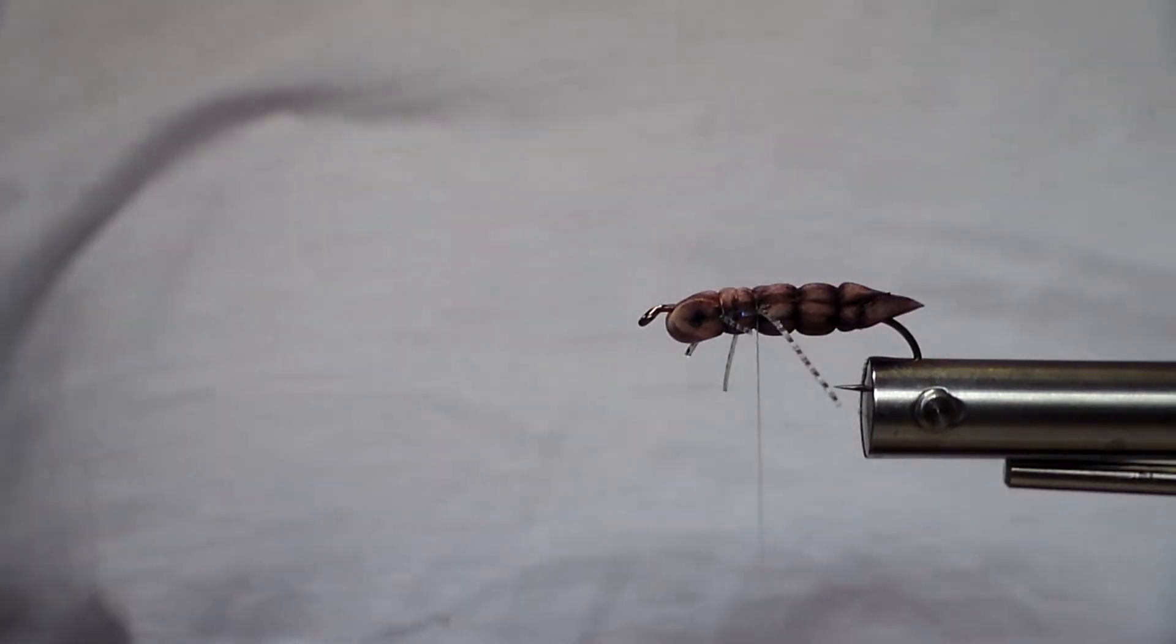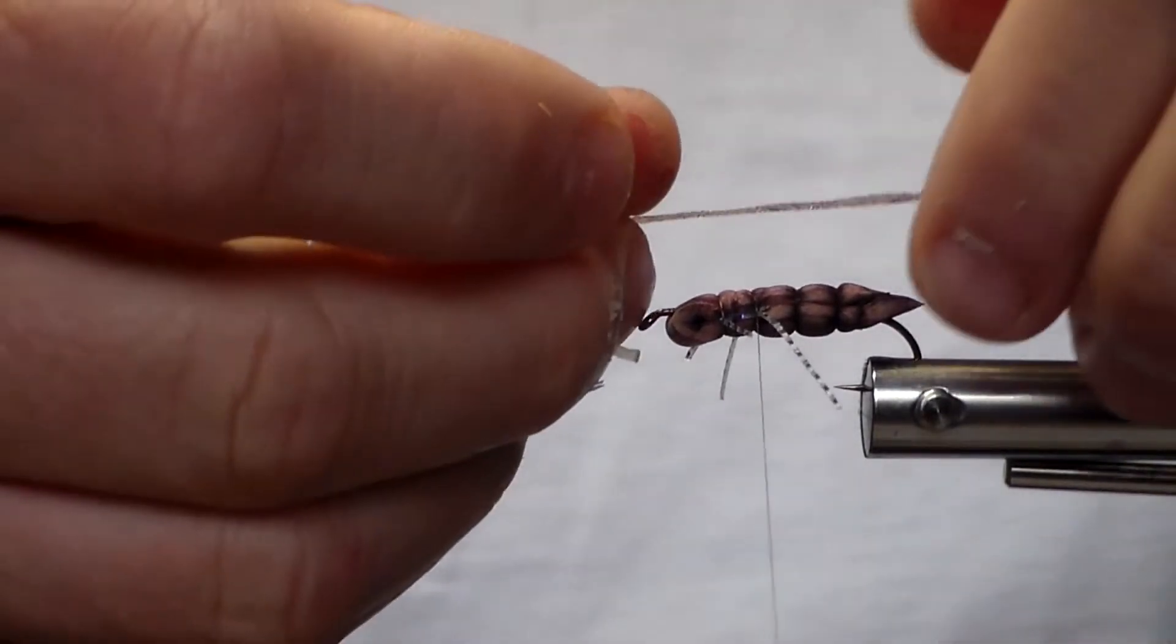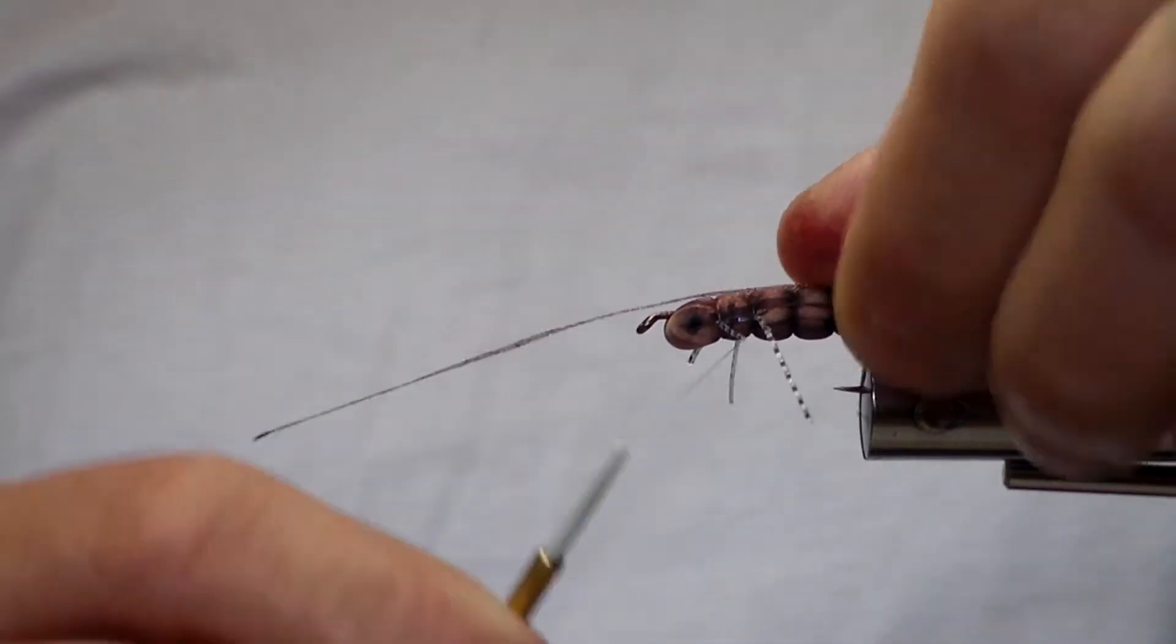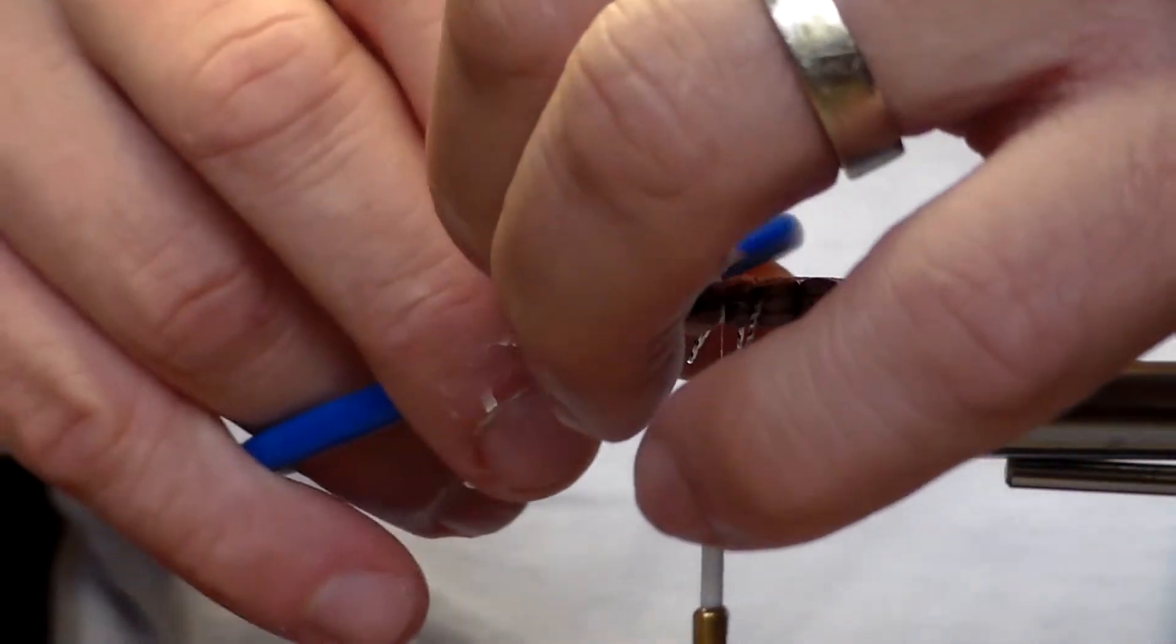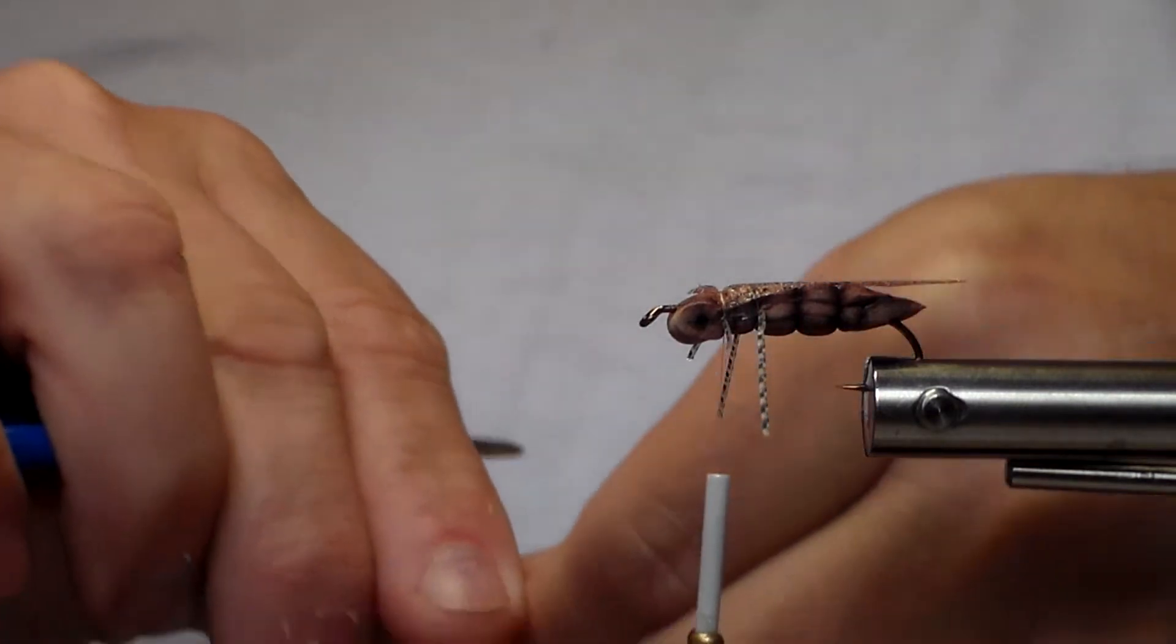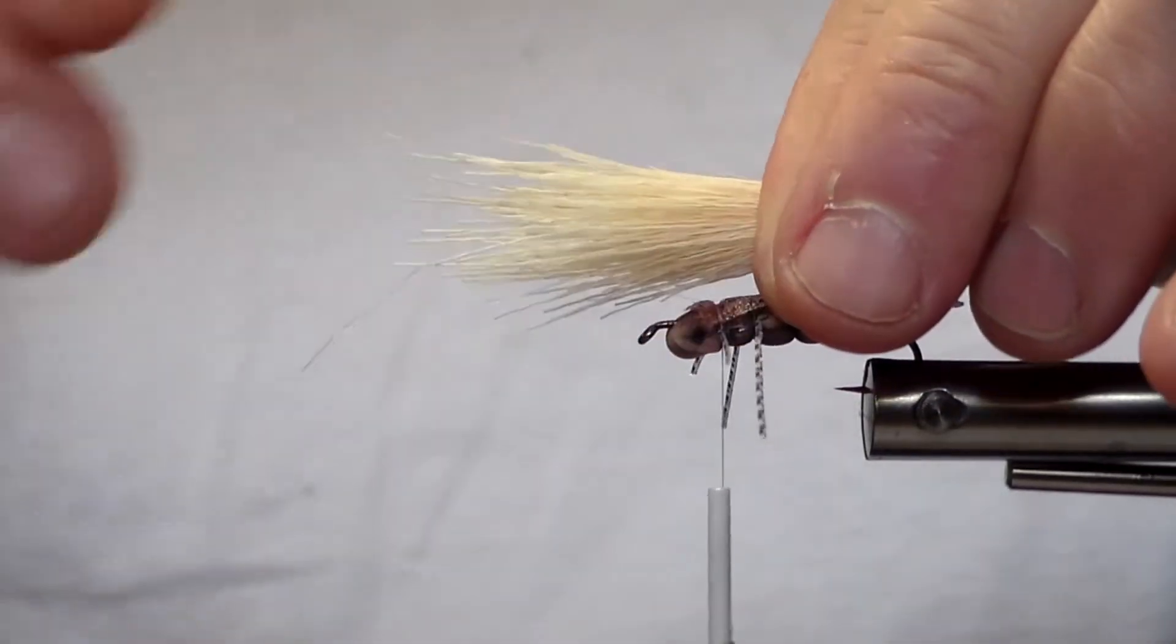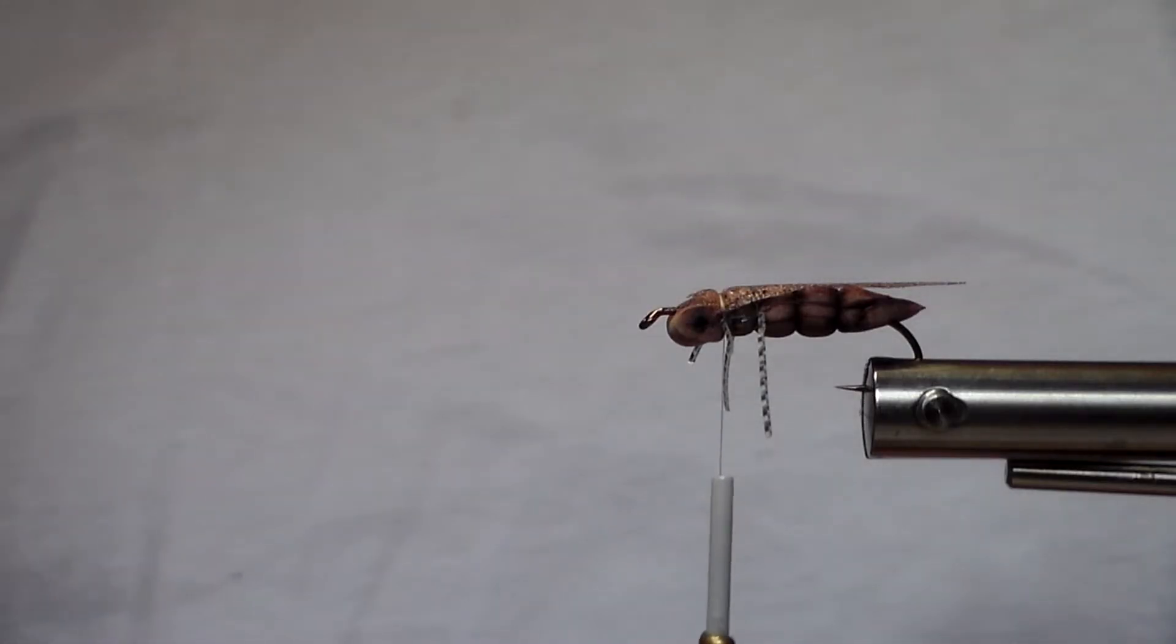And once I do that I tie in a piece of web wing, which I've already cut that wing. And I like that to extend it a little past the rear of the body. I'll cut the web wing. Next I'll place my elk hair. I like my elk hair to be about the length of the body. Before I set it in, I like to have it just extend past my tie-in point, like so. Now I'm ready to tie in.